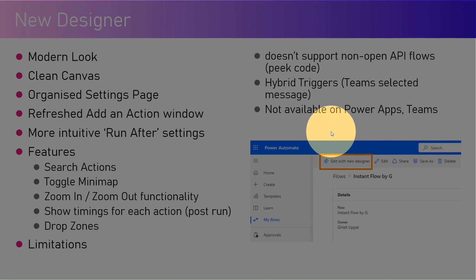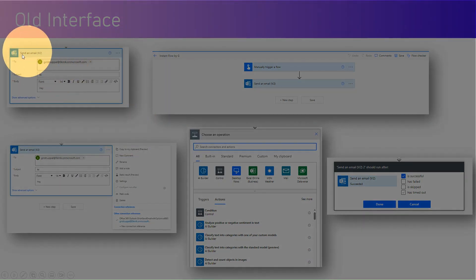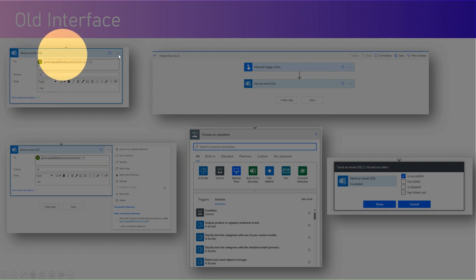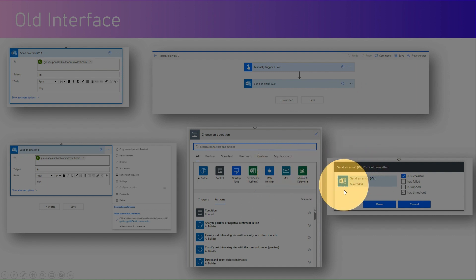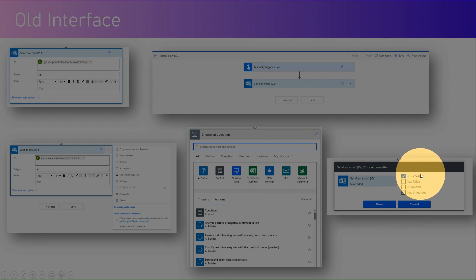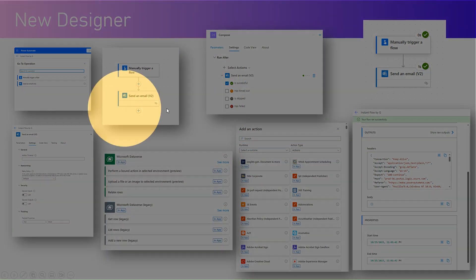This is how the old interface looks like currently — controls like Send an Email and the entire canvas when you author a flow. This is the operation selection action, and this is how the Run After interface looks like — it shows you a checkbox with some text in it.